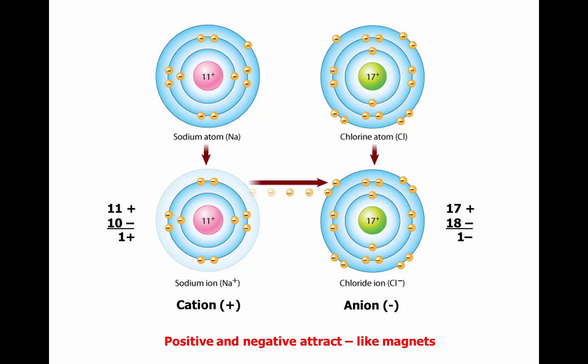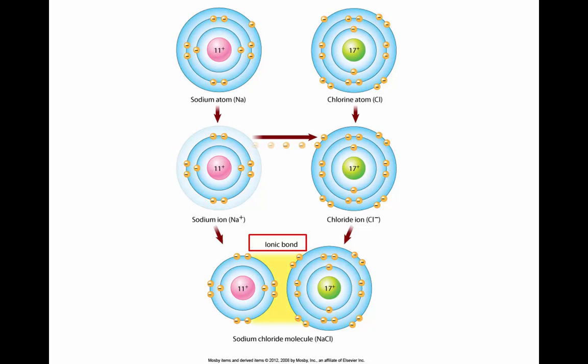Chloride is a negatively charged ion — an anion — because it still retains its 17 protons in the nucleus, but having received an extra electron, there is one more negative charge than positive. The positively charged sodium forms an ionic bond with the negatively charged chloride ion, forming the compound known as sodium chloride — table salt.